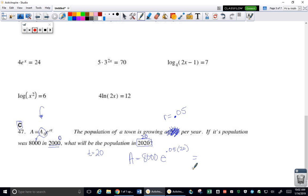And you put this in your calculator. And you get 8,000, not 80, E is 21,746.